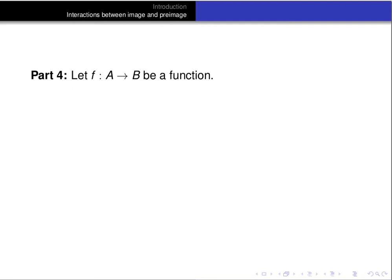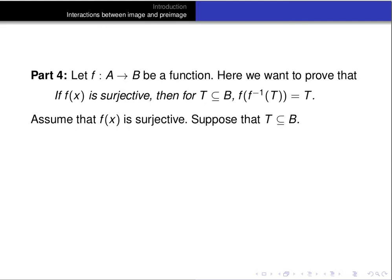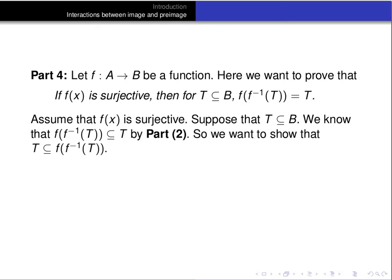Now let's prove part 4. Assume f is a function from A to B. We want to prove that if f is surjective, then for any subset T of B, the image of the pre-image of T is equal to T. Assume f is surjective and T is a subset of B. By part 2, we already know the image of the pre-image of T is a subset of T, so we need to show T is a subset of the image of the pre-image of T.